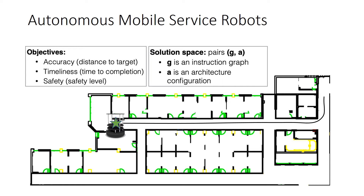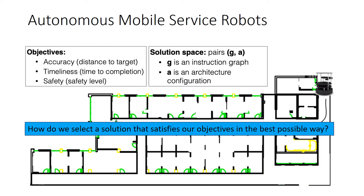Conversely, adapting the task specification — for instance, when the robot needs to find a new path because an obstacle is blocking the way — might require reconfiguration, because the current architecture configuration may not be suitable for the new path. For instance, a new path might include dark corridors in which camera-based navigation is no longer an option.